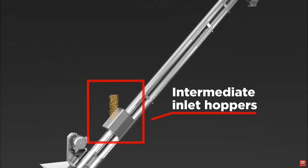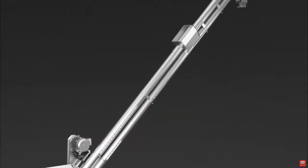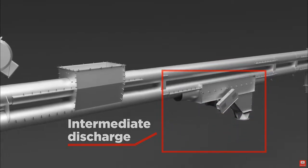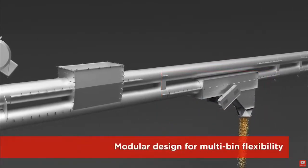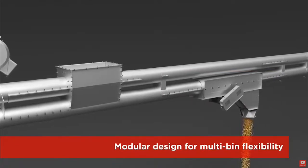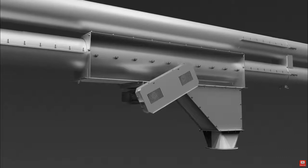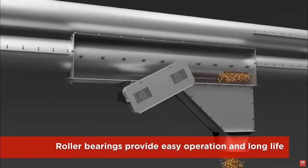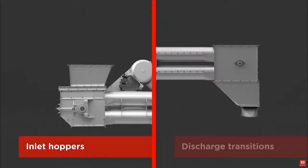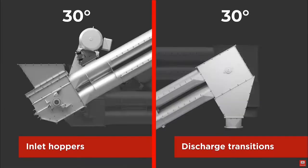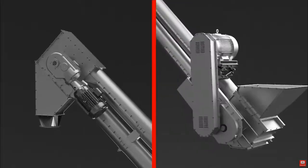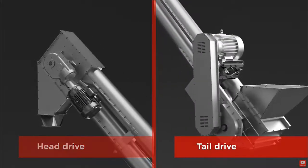Intermediate inlet hoppers can be added anywhere along the tube and drop grain directly to the moving chain. The modular design of the intermediate discharge units provides flexibility for the Grain Drive tube conveyor to be easily configured in multi-bin grain systems. Electric or manual intermediate discharge gates feature roller bearings for jam-free operation and long life. Multiple inclines can be achieved with inlet hoppers and discharge transitions available in 0, 30, and 45 degree options. Drives can be located at the head or tail, and all surfaces are galvanized for durability.